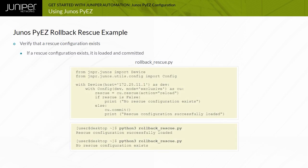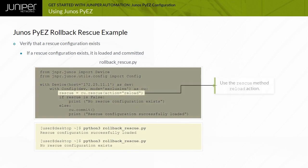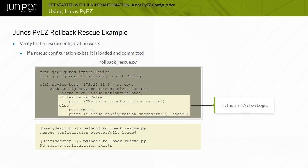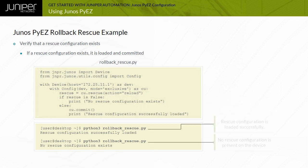This script uses the rescue method reload action to load a rescue configuration as a candidate configuration on the target device. Using Python if-else logic, the script verifies that a rescue configuration is present on the device, commits the changes, and prints the appropriate string to the screen.